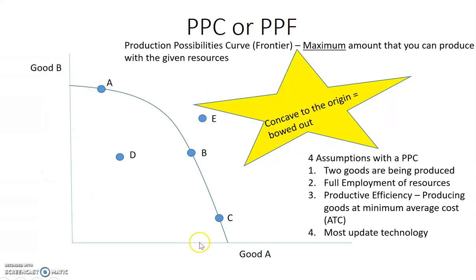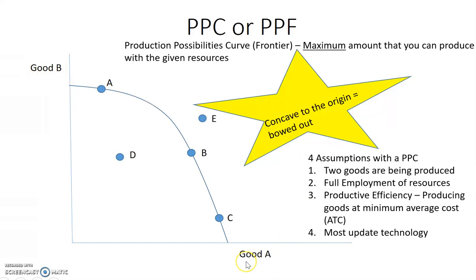When we look at this PPC, we have to recognize the four assumptions that go along with it. The first one we've already talked about: two goods are being made — in this case, good A and good B. It doesn't matter if you label the axes good A or good B, as long as you've got the two axes labeled with them.